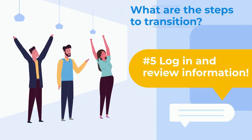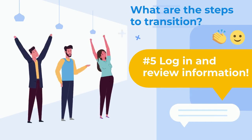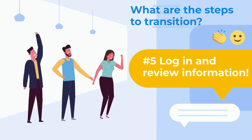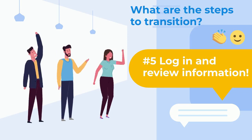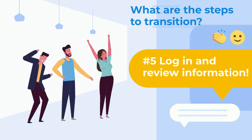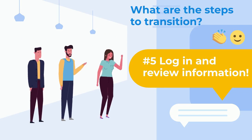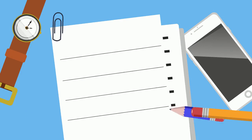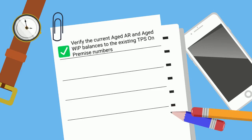And finally, log in and review the information. Once the transition team is complete, they will alert you so your team can log in using their unique username and password and begin using the program — including adding time, creating invoices and payments, as well as workflow entries. The firm administrator should verify the current aged AR and aged WIP balances to the existing TPS on-premise numbers. Basically, you know how things were before, so just make sure they match up now.